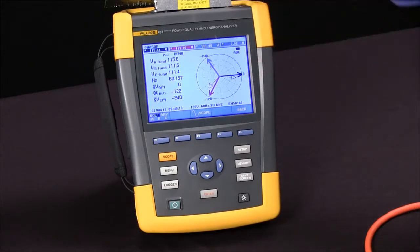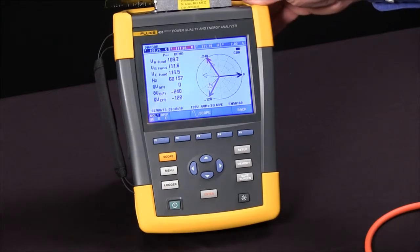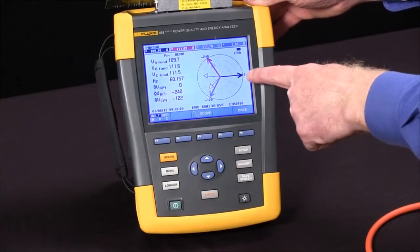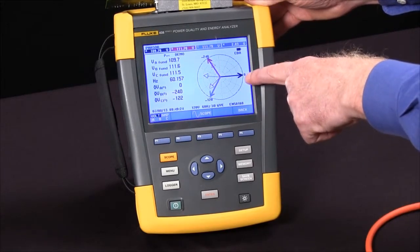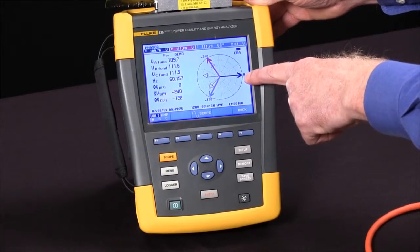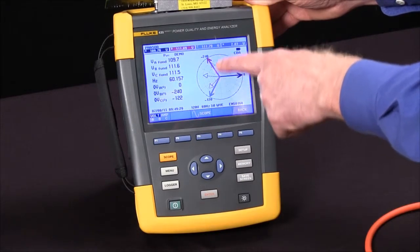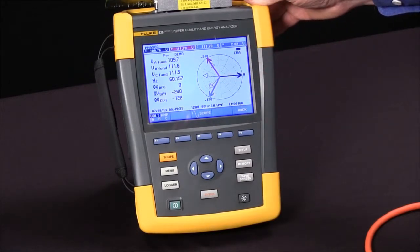If things were miswired, we might see something like this, in which case you can see your current vector for phase A is 180 degrees out of phase, meaning that current clamp is backwards, and your signals for B and C, those wires have been mixed up as well.